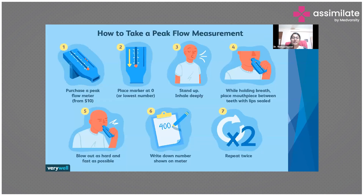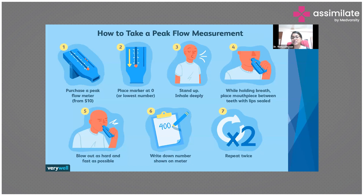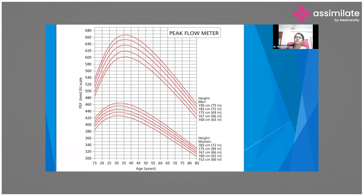To use the peak flow meter: set the pointer to the lowest number, stand up, inhale deeply, seal your mouth tightly around the mouthpiece with no air leakage, and blow out as hard and fast as possible. Note the number where the pointer stops. Repeat the test twice. It's a very simple test that anyone can perform at home.